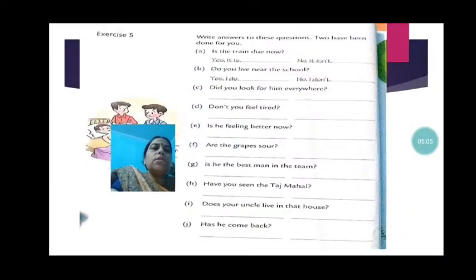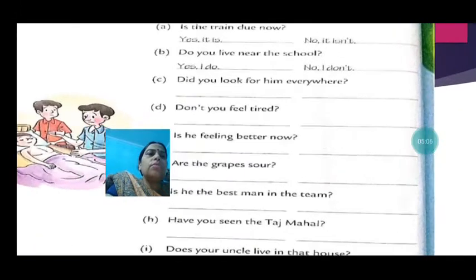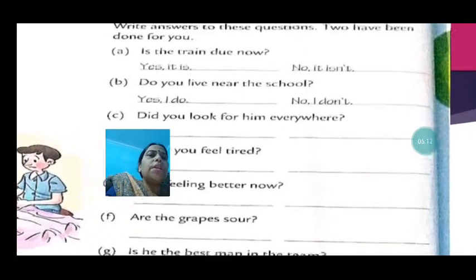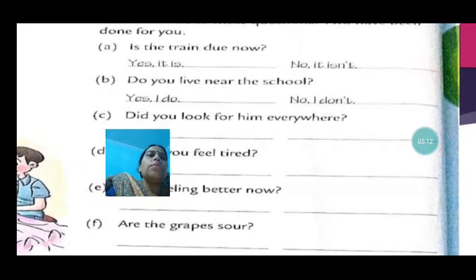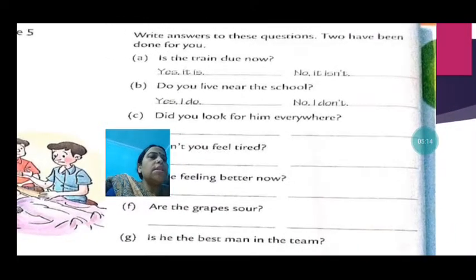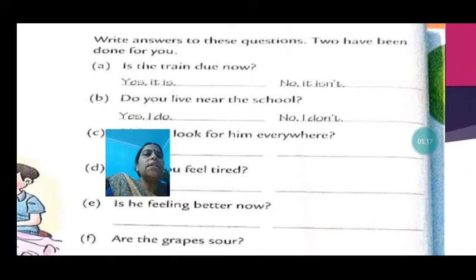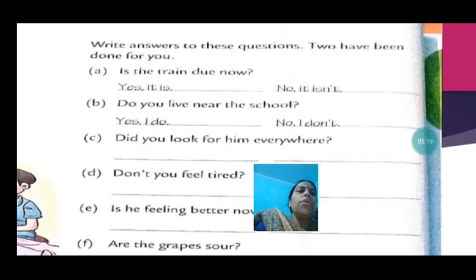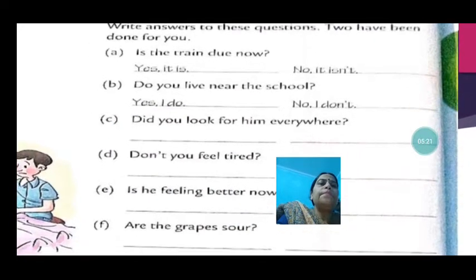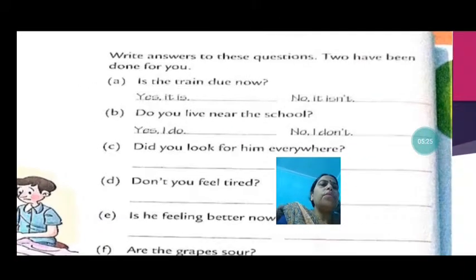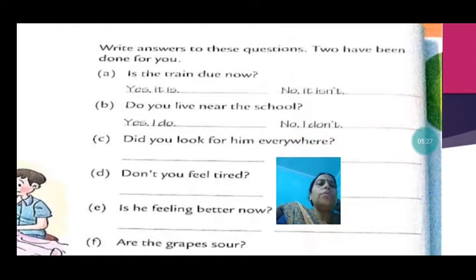Now let us see these questions — how to write answers. Is the train due now? If the train is due, yes, it is. If it is not, you will say no, it isn't. Do you live near the school? If you live near the school, you will say yes, I do. If you don't, no, I don't.